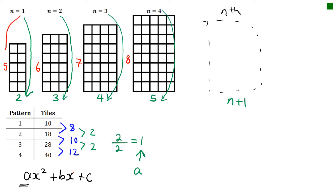Now we do the same thing for the side. Pattern 1 had side 5, pattern 2 had side 6, pattern 3 had side 7, and pattern 4 had side 8. You should be able to see that if you add 4 to each pattern number, you get the length of the side. So that means we need N plus 4 for the nth pattern's side.